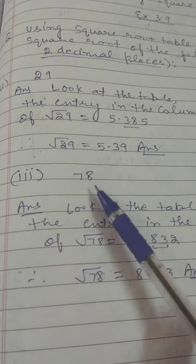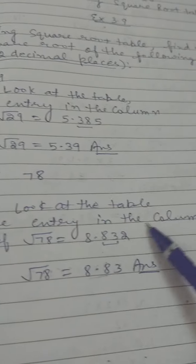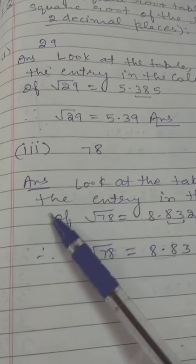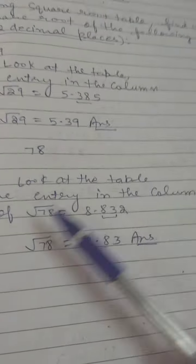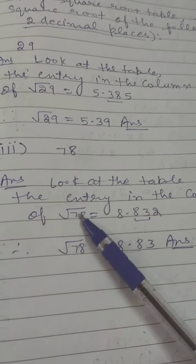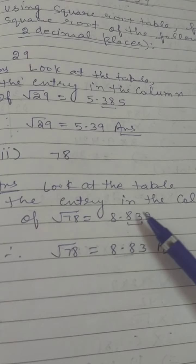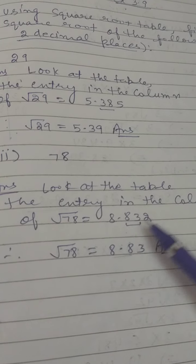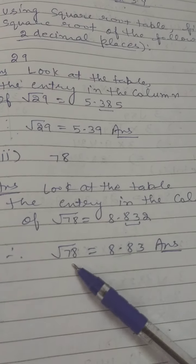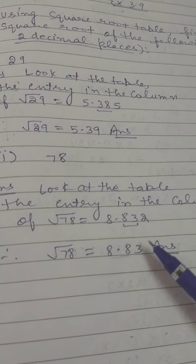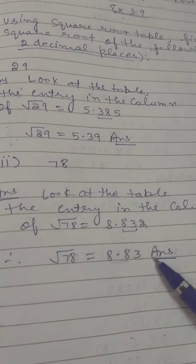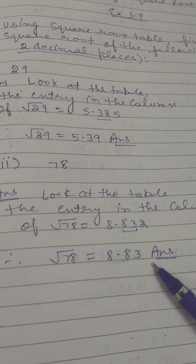Third question: find square root of 78. Look at the table — the entry for square root of 78 is 8.832. So square root of 78 is 8.83, which is your required answer.